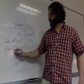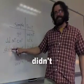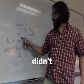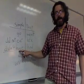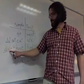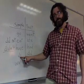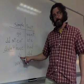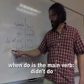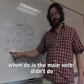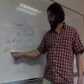Most people use the contraction 'didn't': didn't go, didn't eat, didn't have, didn't do. To make 'do' negative when 'do' is the main verb, you use 'didn't' in the past tense — for example: didn't work.